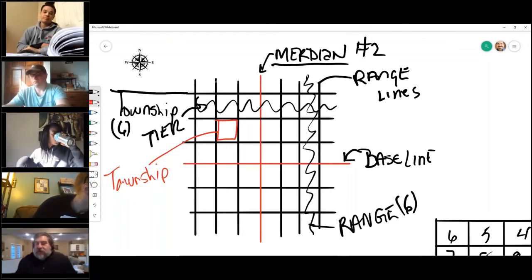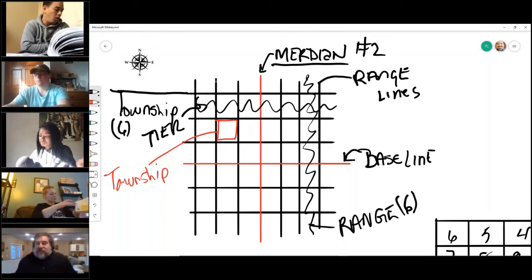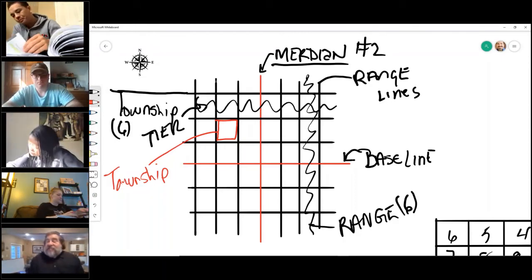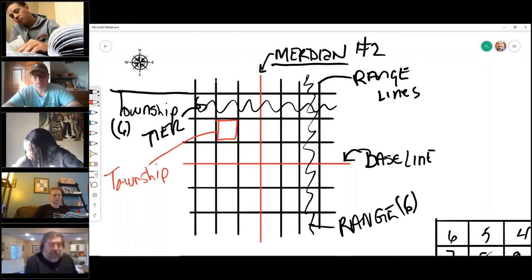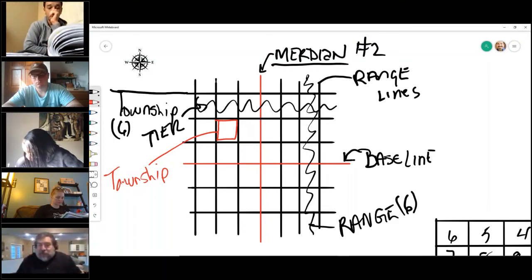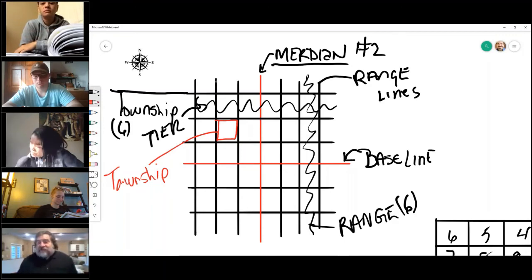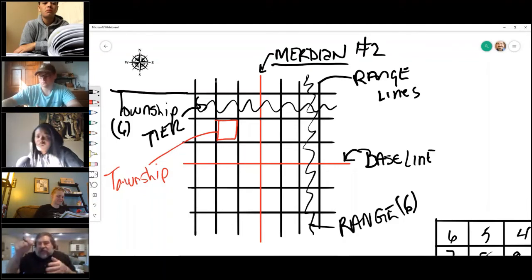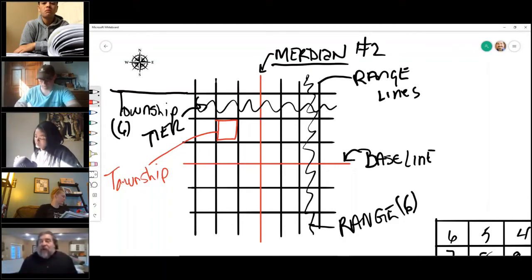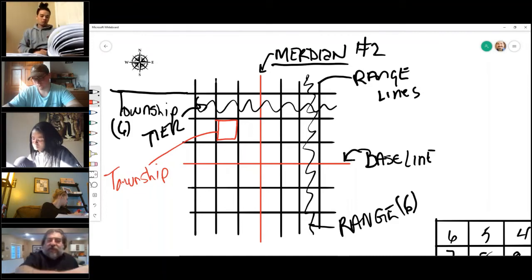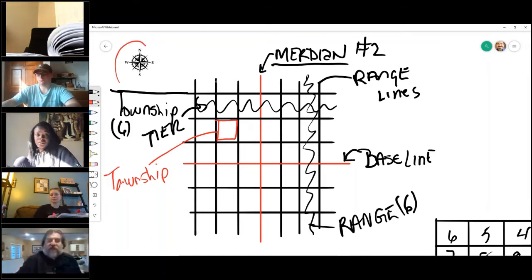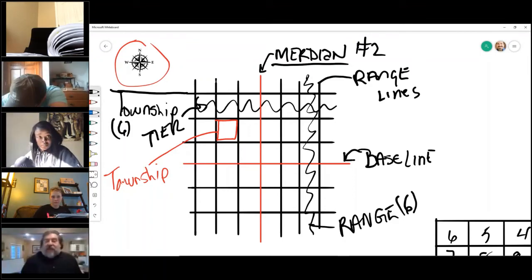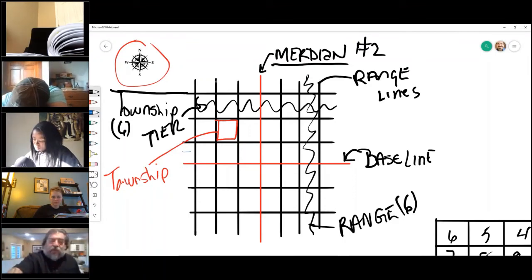Now we need to identify each township. If you've ever played the game Battleship, it's an intersecting coordinate of the top row and the side row—same concept here. That's how we identify each one of these townships. Obviously we got the north range line here so that we can see these are our townships. If we looked at this one, this is one tier north of the zero line.